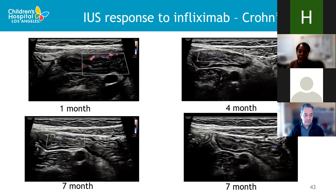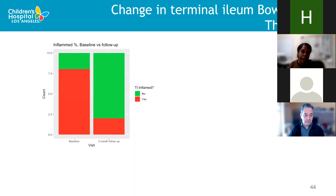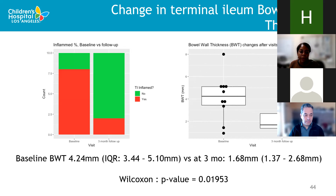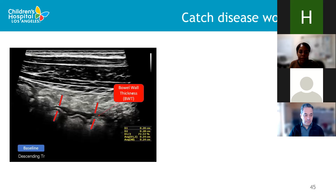Overall in our cohort — representing ten patients so far as this is ongoing research — looking at the terminal ileum, which was overrepresented in our patient population, eight patients initially had inflamed terminal ileum, dropping to two patients at the three-month visit. The mean bowel thickness for the entire cohort changed from 4.2 millimeters to 1.7 millimeters, and that was statistically significant.